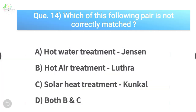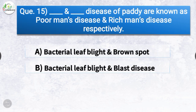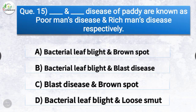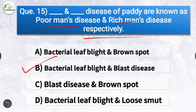Question number fifteen: Dash and dash disease of paddy are known as poor man's disease and rich man's disease respectively. The options are bacterial leaf blight and brown spot, bacterial leaf blight and blast disease, blast disease and brown spot, or bacterial leaf blight and loose smut. The correct answer is option B. Bacterial leaf blight and blast disease of paddy are known as poor man's disease and rich man's disease respectively.